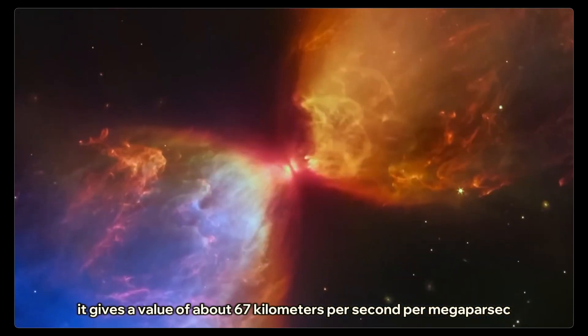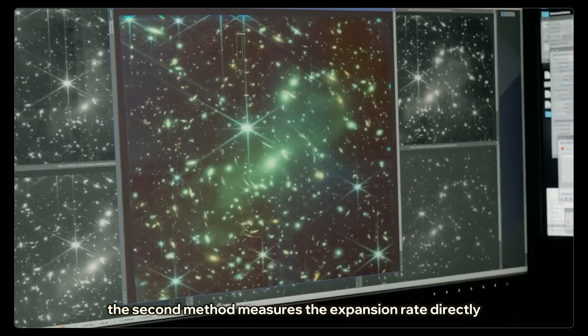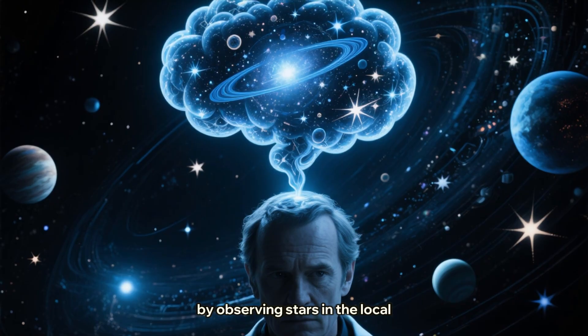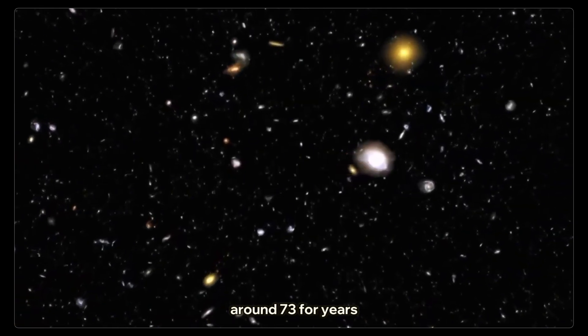It gives a value of about 67 kilometers per second per megaparsec. The second method measures the expansion rate directly by observing stars in the local modern universe. This gives a faster value, around 73.